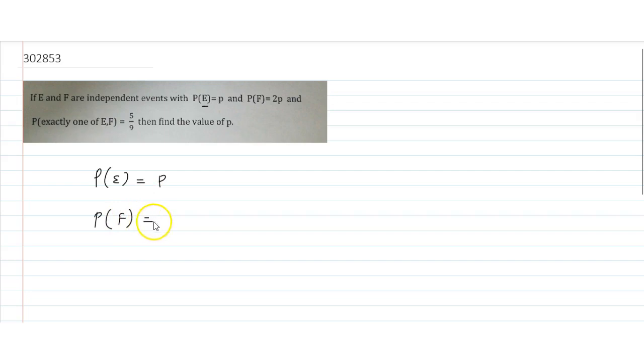Event probability given as 2p. Find the probability of exactly one event occurring. This means exactly one event should occur - either E or F can happen, or E can happen or F can happen.